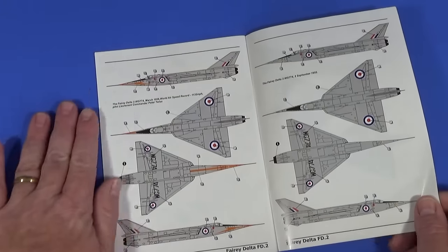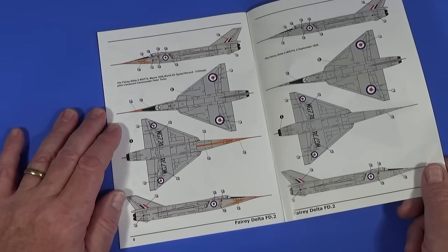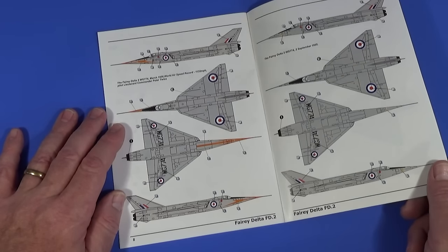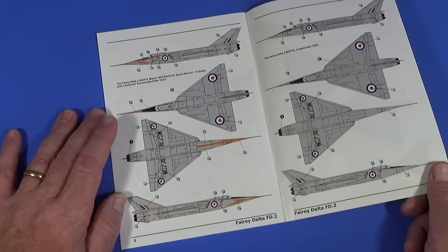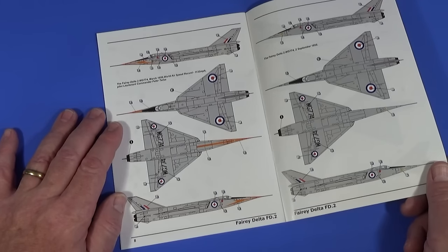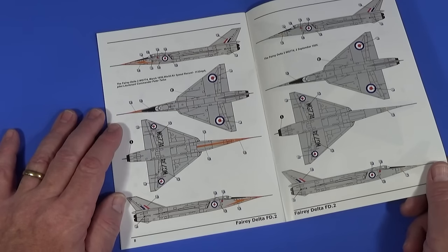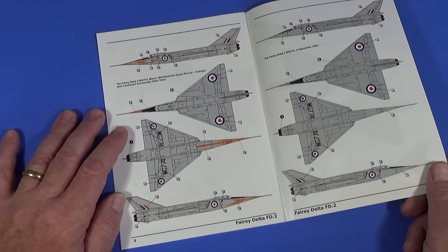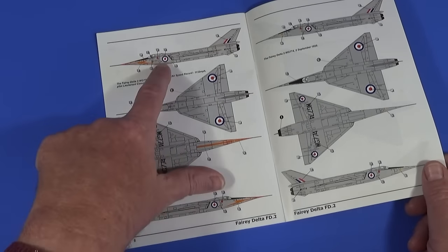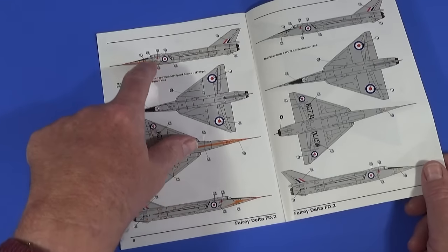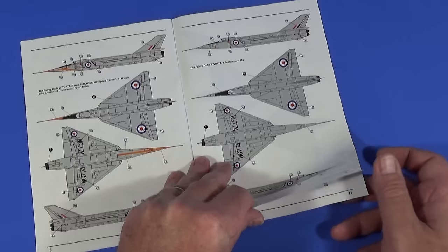And then we have the schemes. So the first scheme is March 1956, when Peter Twiss, Lieutenant Commander Peter Twiss - Fleet Air Arm pilot Peter Twiss, not RAF - took the aircraft to 1,132 miles per hour, an absolute world airspeed record, beating the previous record by over 300 miles an hour, may I point out, with the nice stripes and speed record markings on that.